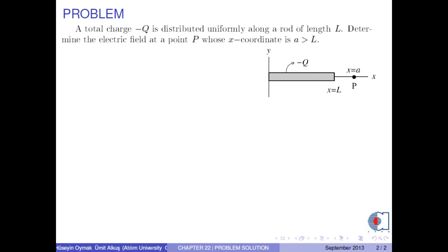A total charge negative Q is distributed uniformly along a road of length L. Determine the electric field at a point P whose x-coordinate is A, which is greater than L.